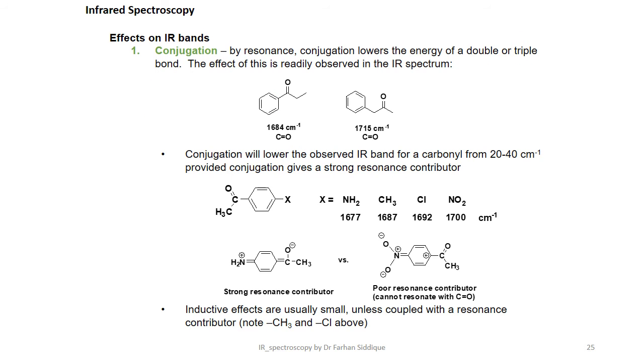Effects of IR bands depends upon conjugation. By resonance, conjugation lowers the energy of double or triple bonds. The effect of this is readily observed in IR spectrum. Conjugation will lower the observed IR bands for carbonyl from 20 to 40 cm⁻¹ provided conjugation gives a strong resonance contribution. Inductive effects are usually small unless coupled with resonance contributor.